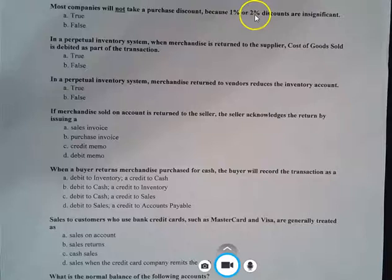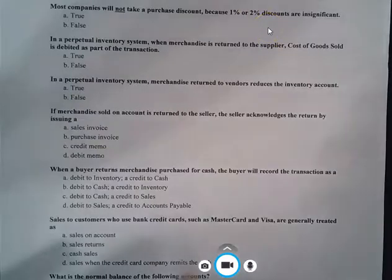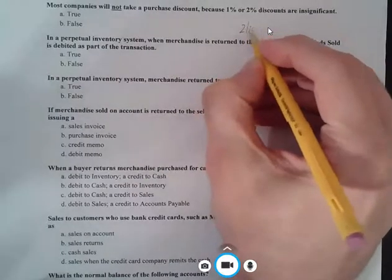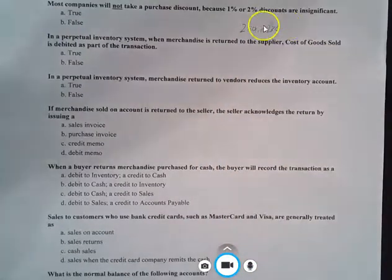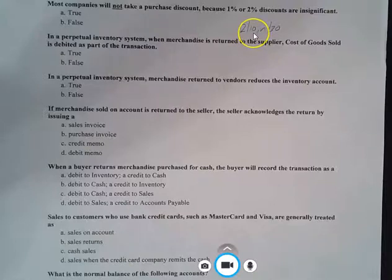These percentages generally apply to a period of about 10 days. So if you recall from the PowerPoint presentation, we talked about what was called implicit interest. And so if we have terms of, say, for example, 2/10 net 30, meaning that we get a 2% discount if we pay within 10 days and the net amount bill, even if we don't take the discount, is still due within 30 days.